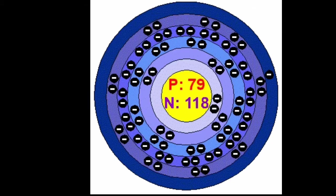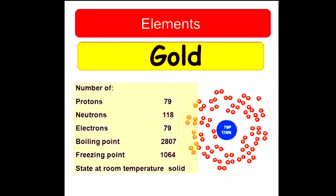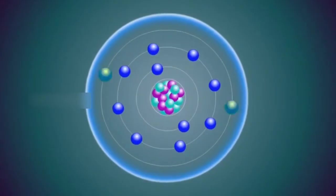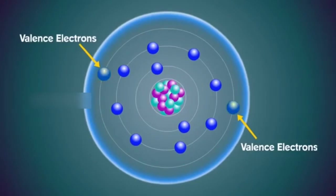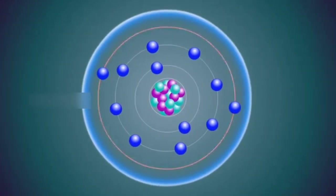Gold is the chemical element with 79 protons. Every atom containing 79 protons is a gold atom. In principle, we can therefore create gold by simply assembling 79 protons.